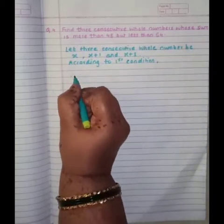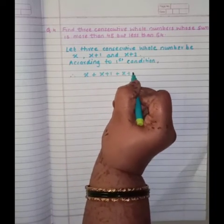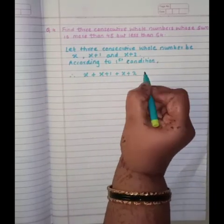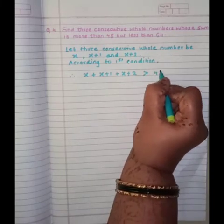Therefore, X plus X plus 1 plus X plus 2 is more than 45. That means this sum is more than. So, this is the sign for more than 45.